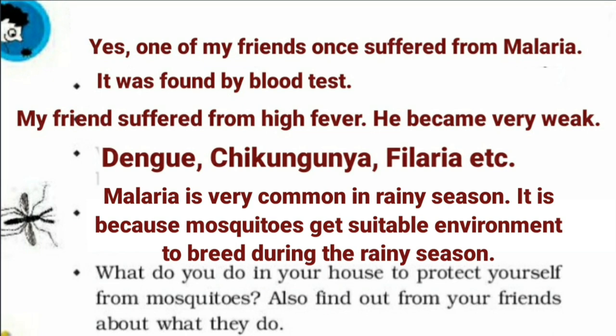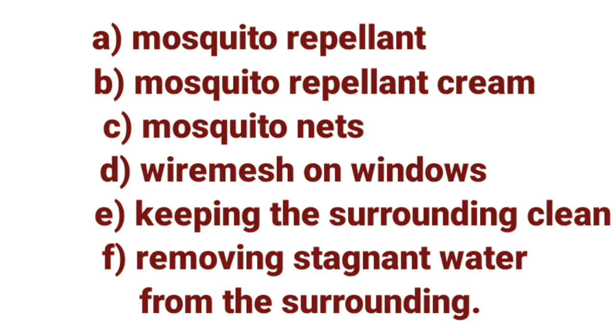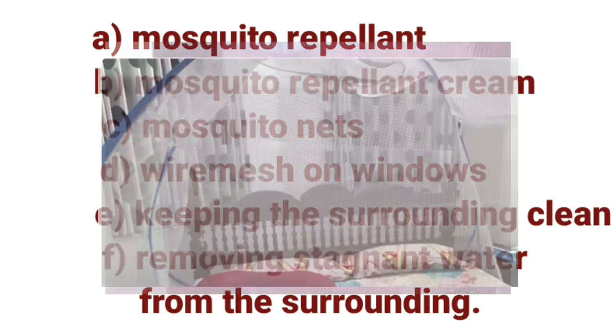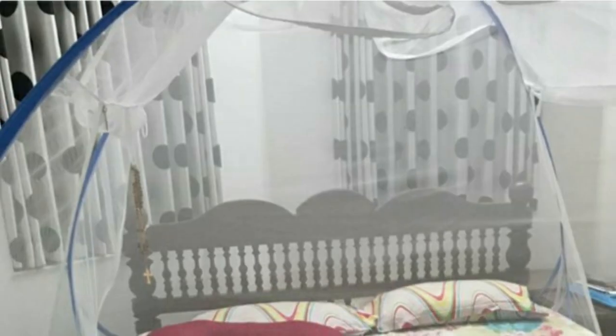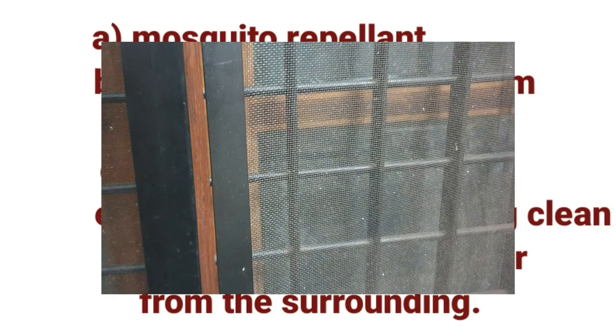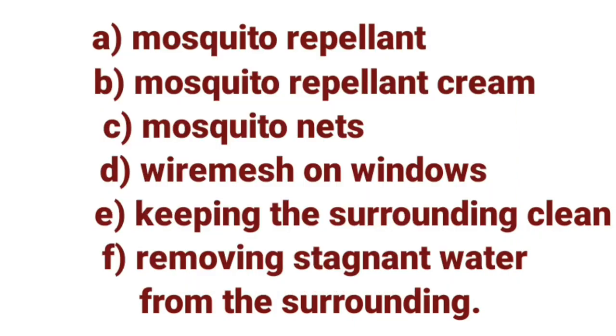What do you do in your house to protect yourself from mosquitoes? To protect ourselves, we use mosquito repellent cream, wire mesh on windows, keep the surrounding area clean, and remove stagnant water from the surroundings. In this way we can protect ourselves from mosquitoes.